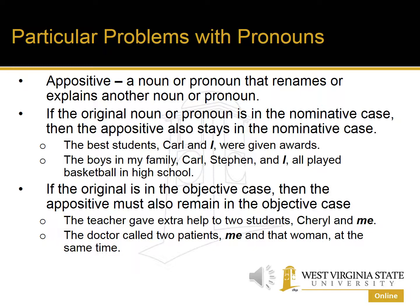It's not 'Carl and me' — correct grammar is 'Carl and I.' Similarly: 'The boys in my family, Carl, Stephen, and I, all played basketball in high school.' Again, 'boys' is the subject in the nominative case, so the appositive 'Carl, Stephen, and I' also has to be in the nominative case. It's not correct to say 'Carl, Stephen, and me.'